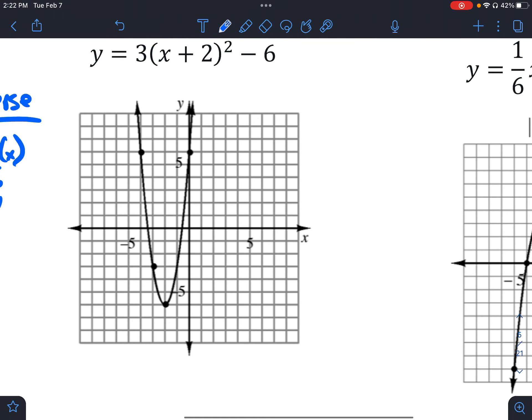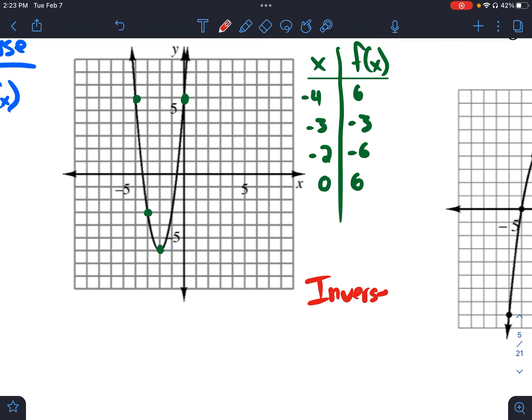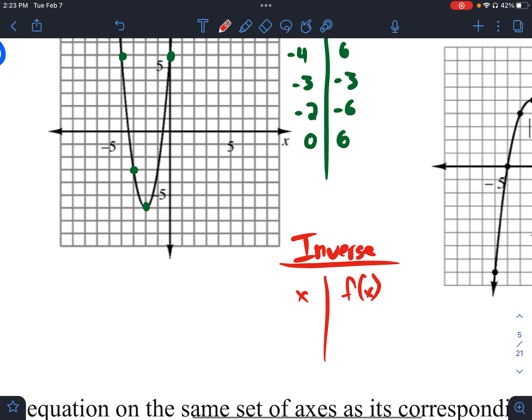So again, with these, we're creating tables. We have our x, we have our f(x), or really our y's here. We're going to look at four different points. We have the point negative 4, 6, negative 3, negative 3, our vertex at negative 2, negative 6, and we have a point at 0, 6. And then again, for our inverse, we're just switching all of these. So for our inverse, x, f(x), we have 6, negative 4, negative 3, negative 3, negative 6, negative 2, 6, and 0.